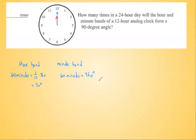It's better for us to work with one minute. If the hour hand rotates 30 degrees in 60 minutes, then in one minute the hour hand rotates one-half degree. And the minute hand rotates 360 degrees in 60 minutes, so in one minute it rotates six degrees — which is 12 times as much.